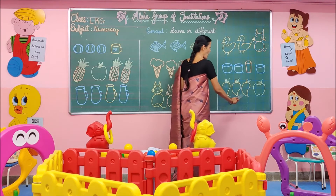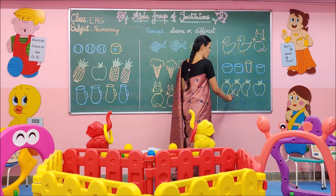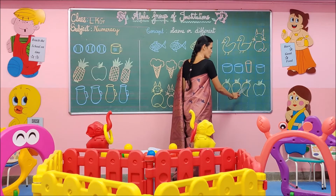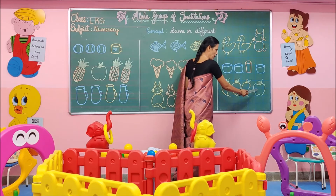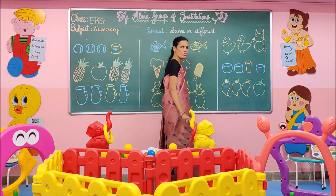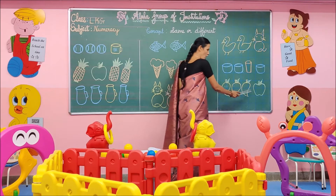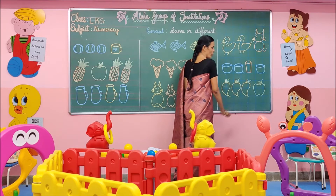Here we have mango. This is mango. This is mango. This is apple. Which one does not belong to this group? Apple does not belong to this group.